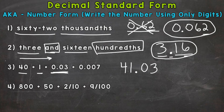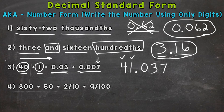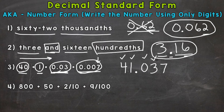So let's put our three. Next we have the thousandths place, and we have a seven there. So we put our seven. Let's double-check: four with a value of 40 — good. One with a value of one — good. No tenths, so zero there. We need that placeholder zero to push the three and the seven to the correct places. Three with a value of three hundredths, and seven with a value of seven thousandths. We are correct: 41.037.